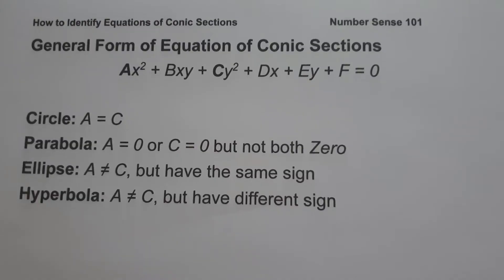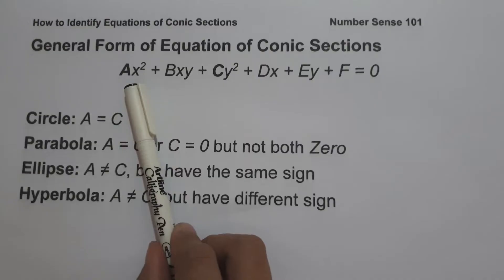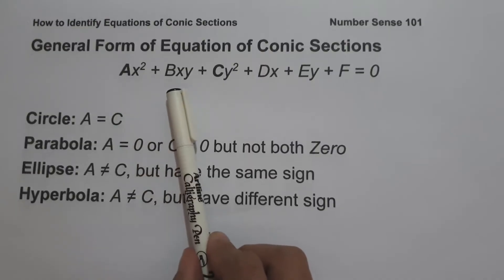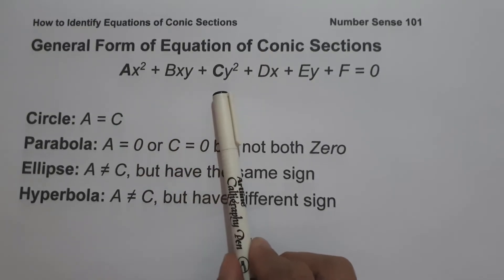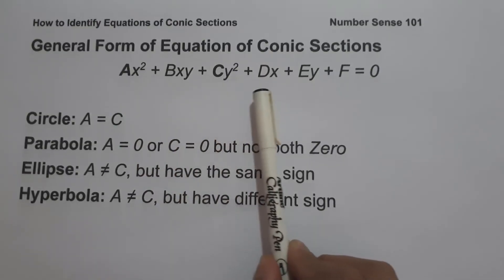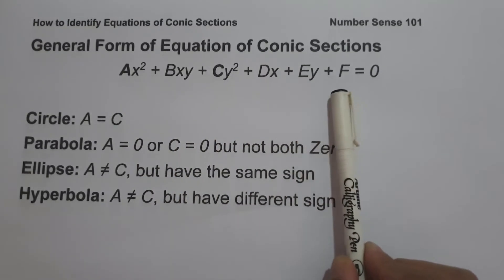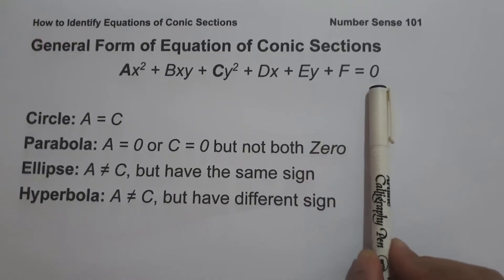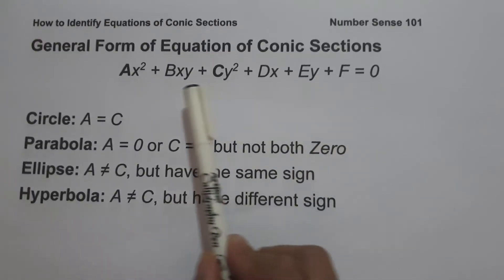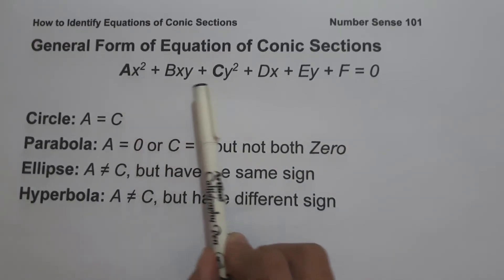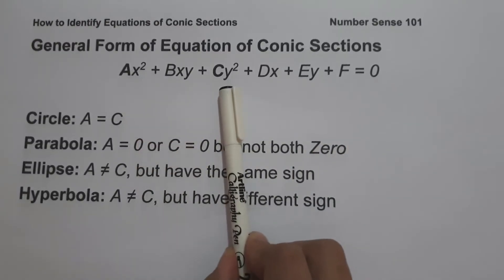The general form of equation of conic sections is written in the form of ax² + bxy + cy² + dx + ey + f = 0. If the coefficient of x² is equal to the coefficient of y²,